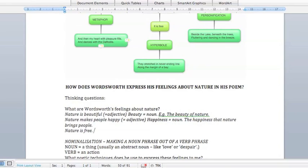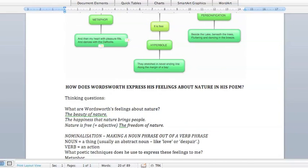And the final one is nature is free. So free is an adjective, we use it to describe things or people. Okay, and so the noun form of free is freedom. So we've got the freedom of nature.